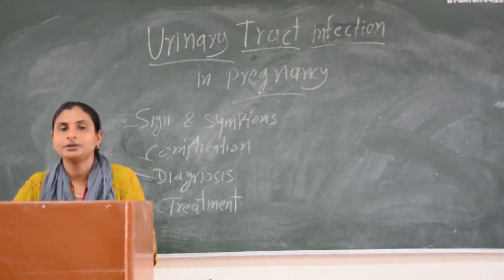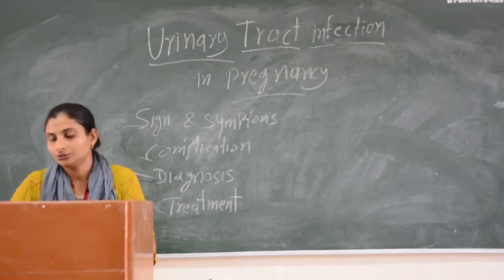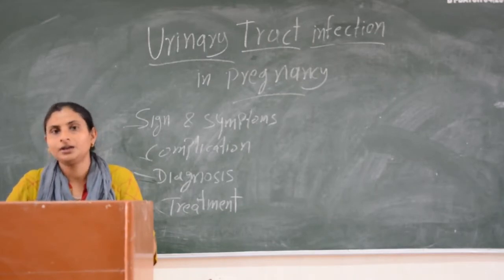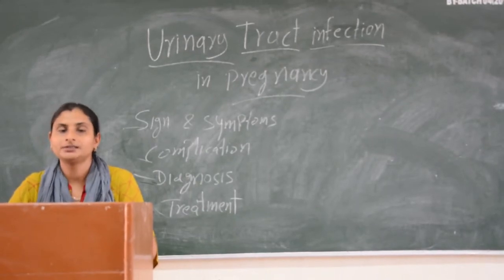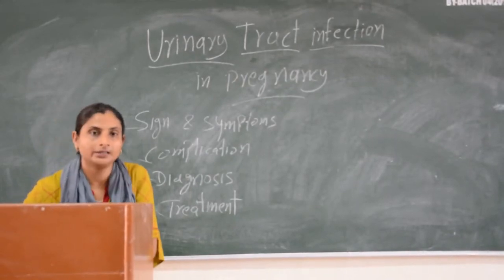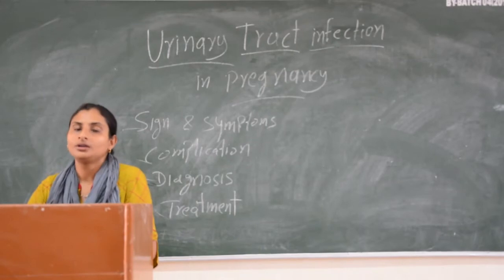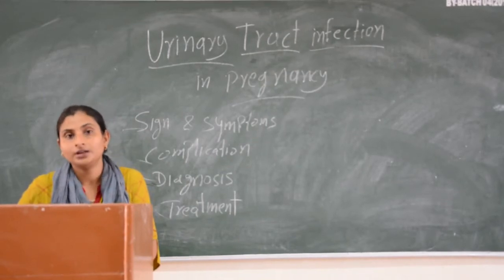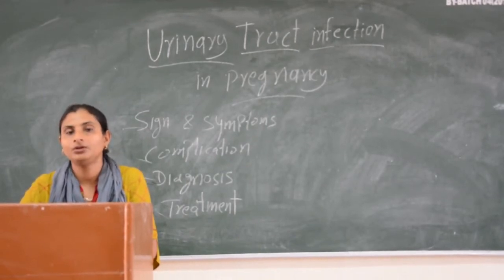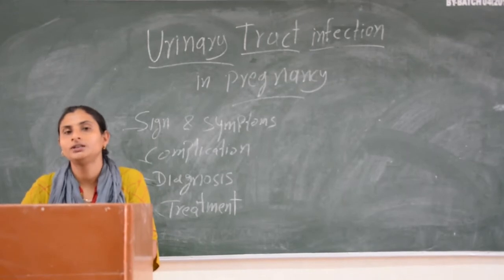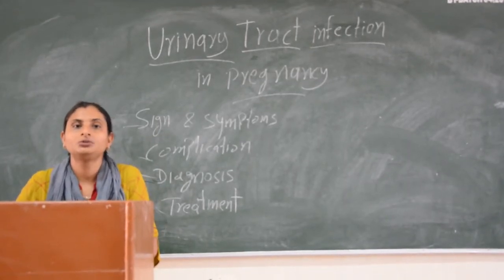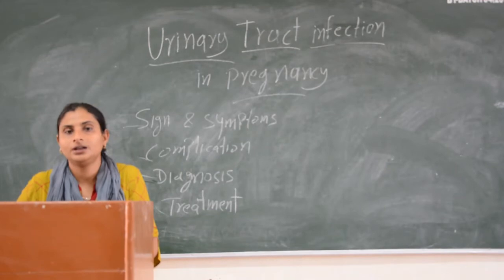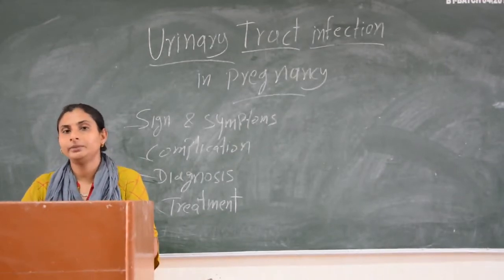Regarding the duration of treatment: for asymptomatic bacteriuria, we give 3–5 days of antibiotic therapy. For cystitis, we give 7 days. For pyelonephritis, we give 14 days total — 2 days of IV antibiotics followed by 12 days of oral antibiotics.